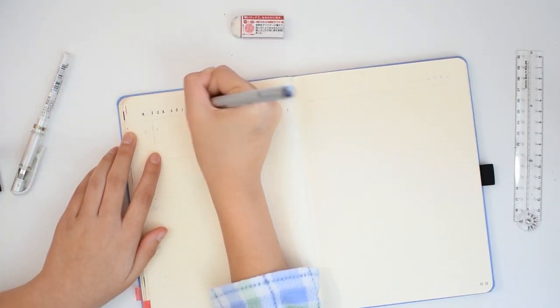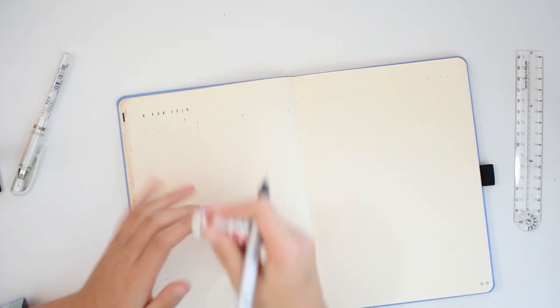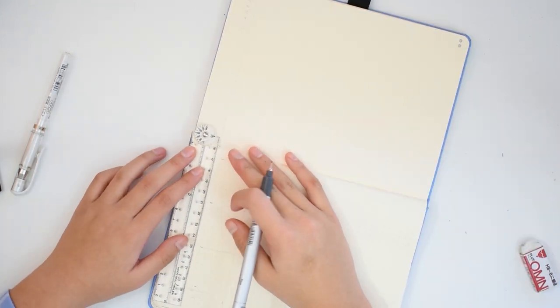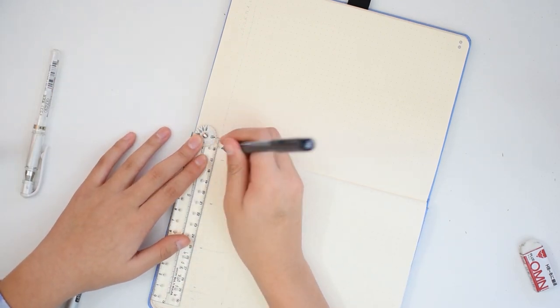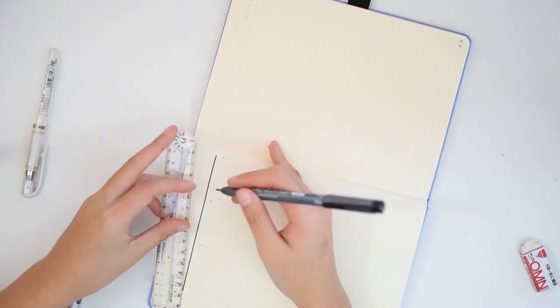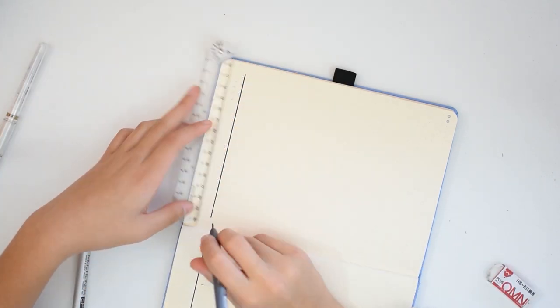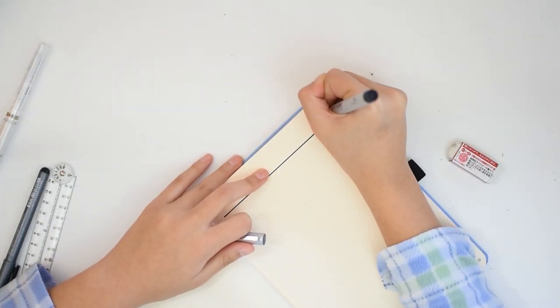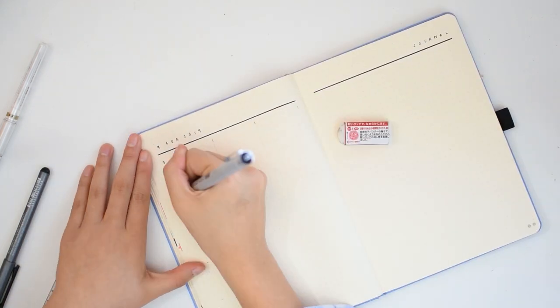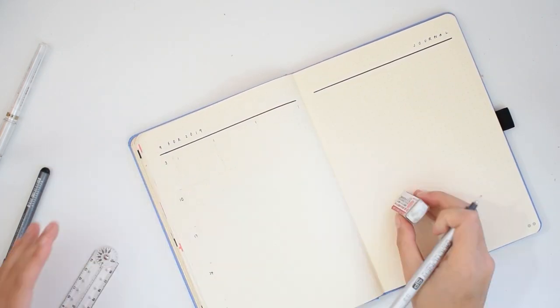Now, moving on to the second spread. This one is a combination of the 9 for 2019 tracking that I've been doing, and my journaling setup. I've really enjoyed using both of these setups in my previous two spreads from the year, but this time I decided to save some space by combining them into one double page setup.